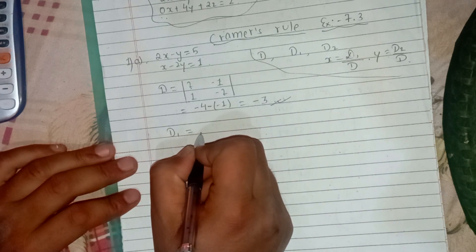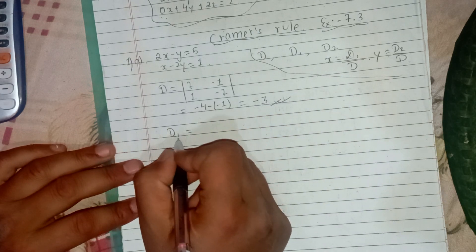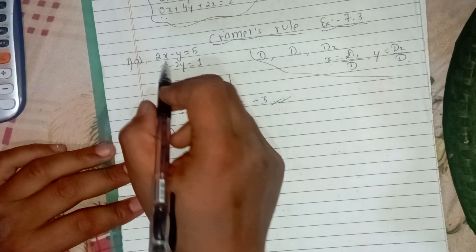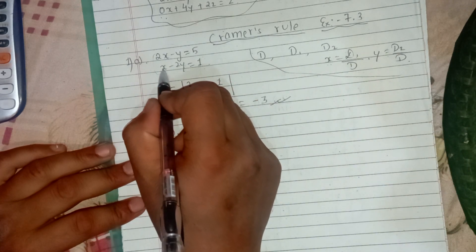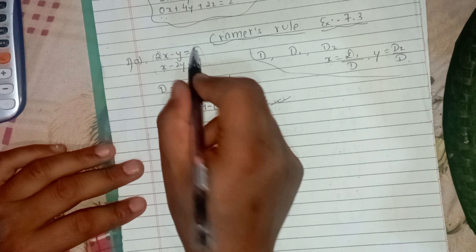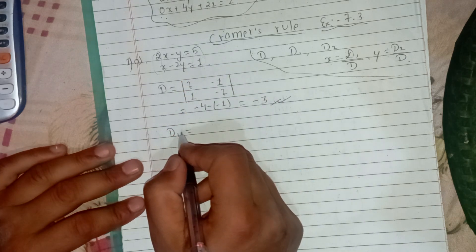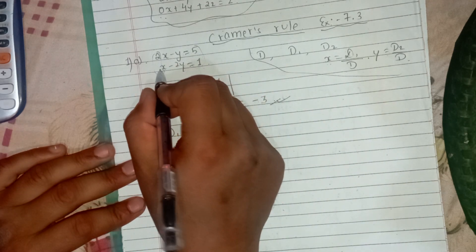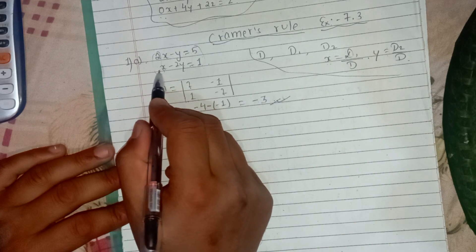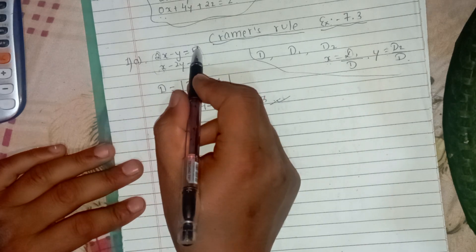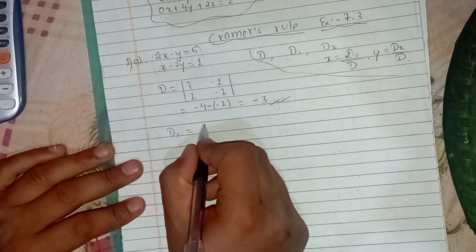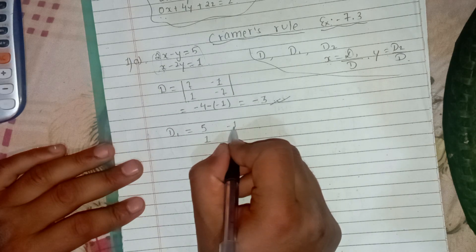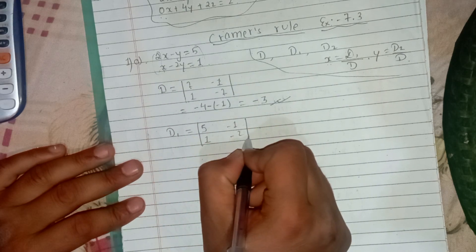For D1, we find the value of x by replacing the x column with constants. The constant column becomes 5, and y's column remains minus 1, minus 2.